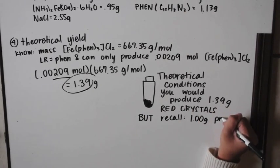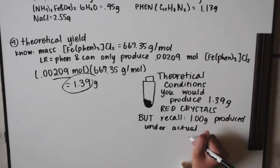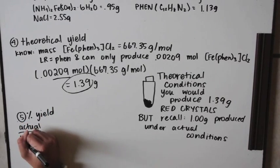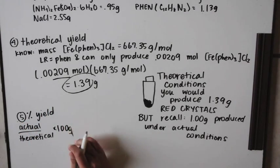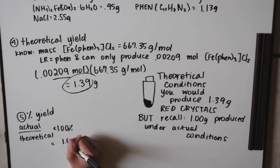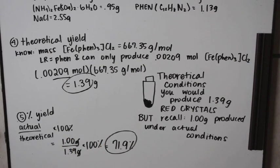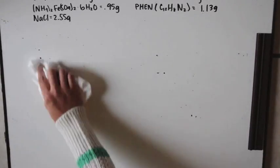But also notice that we only produced 1 gram. So for number five, it's asking for your percent yield, which is actual over theoretical, actual being what you actually ended up with, which is 1 gram, and theoretical, meaning under perfect conditions, which is 1.39, which would make 71.9% yield.